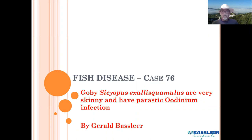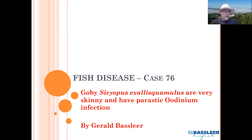The goby is called Sicyopus exallisquamulus — what a name! That is not something we encounter every day. This goby is not very common, but for people who love special fish like this kind of goby, which is a wild-collected goby, it can present serious problems.